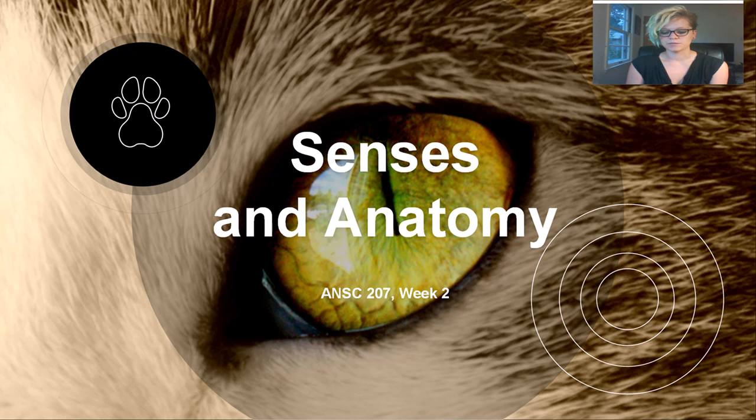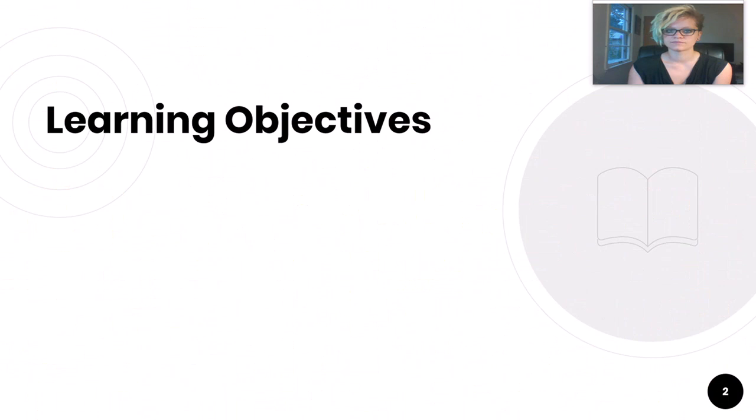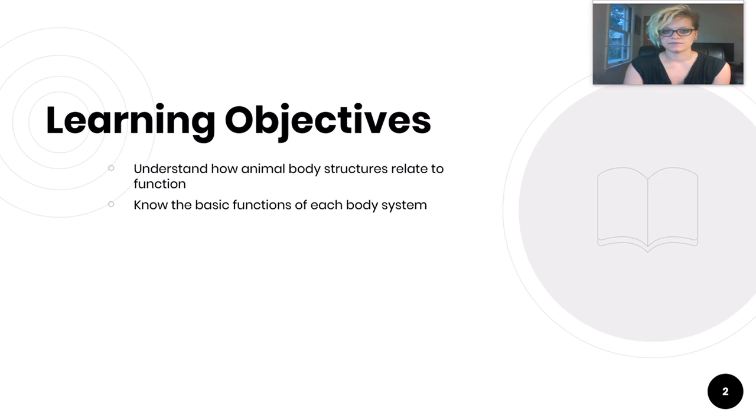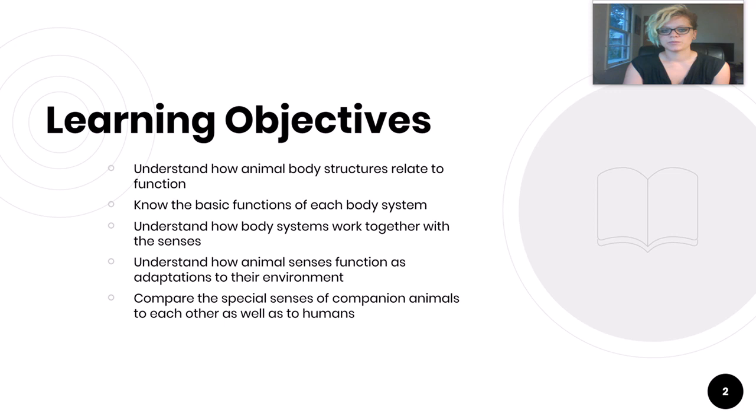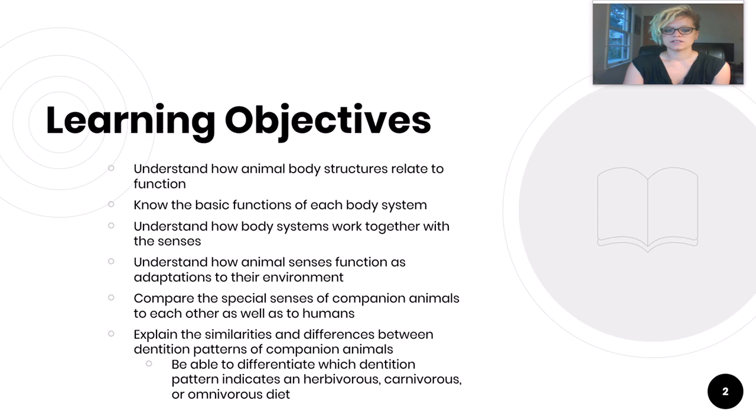Senses are critical to an animal's survival, and understanding animal senses can help us better understand how they experience the world. Our learning objectives for this week are: understand how animal body structures relate to their function, know the basic functions of each body system, understand how body systems work together with the senses, and understand how animal senses function as adaptations to their environment.